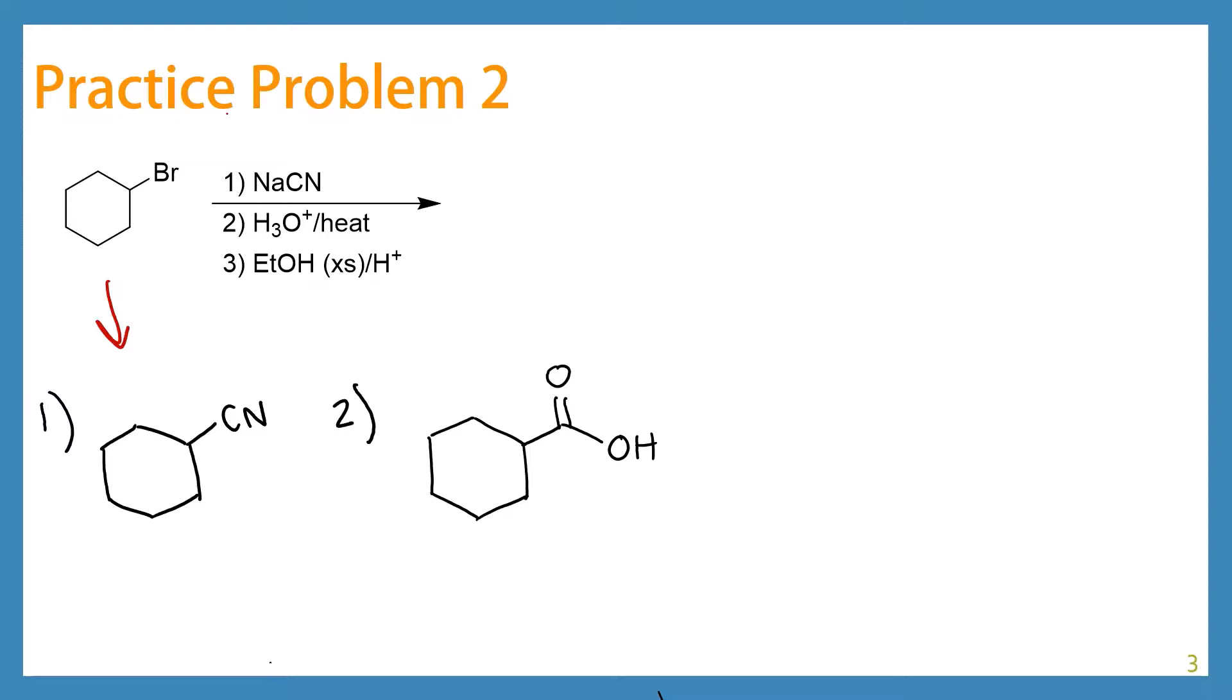So one of the things you want to make sure you check here is that you're not accidentally gaining or losing carbons. Losing carbons would be pretty difficult here because the carbon is directly attached to the ring. But make sure that you have the same number. So we had 1, 2, 3, 4, 5, 6, 7 here. And we still have 1, 2, 3, 4, 5, 6, 7.